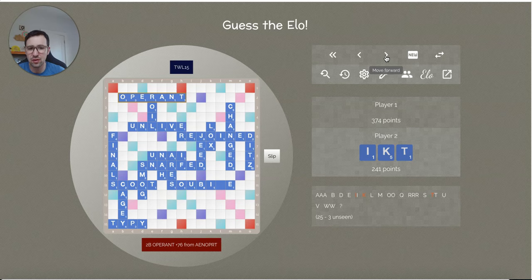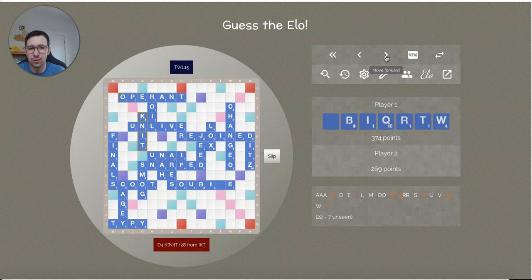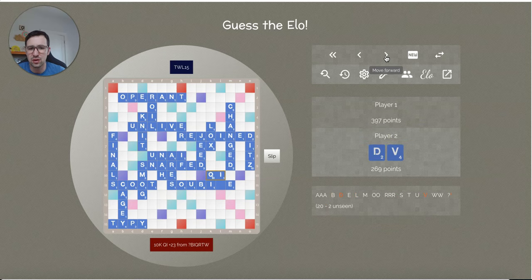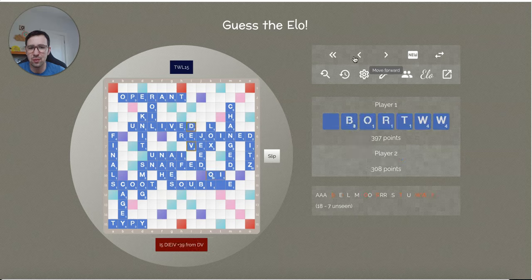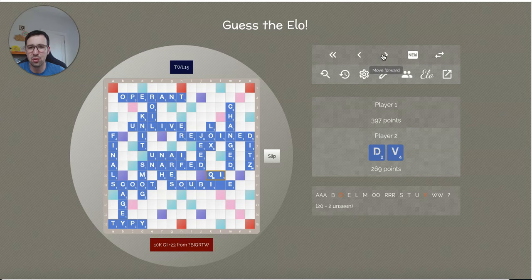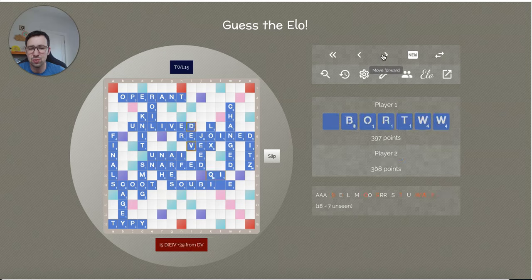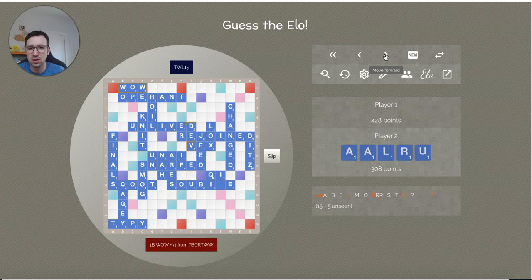Player 2 going to play, I guess, NIT. And, yeah, Player 1 draws the blank. They do have the Q, but they'll be able to get rid of it pretty easily. Just, like, QI above Subis or something. Like, just get rid of the Q. I mean, you could block above Operant, but I think it's more important to get rid of the Q with this score. Yeah, QI is fine. Player 2 draws the V. Plays—oh, that's a great play, though. Look at that. Unlived, Dev, and Vex. 39 points for the D and the V. Very nice play. Yeah, both players making some pretty good plays this game.